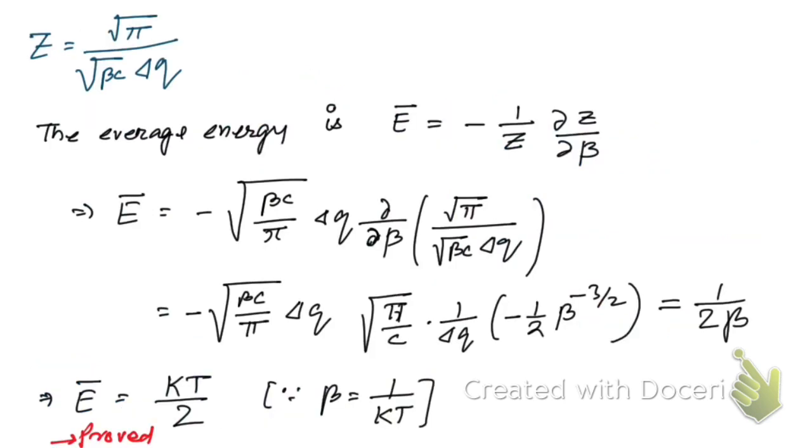Let me go to the next page. There is a spelling mistake—this is average energy, given by this formula. Then one by Z, Z we're going to use this value here, so we have got this. Now derivative of Z: if we differentiate this with respect to β, then what we're gonna get—these parts are constant Δq—so we are differentiating with respect to β only.